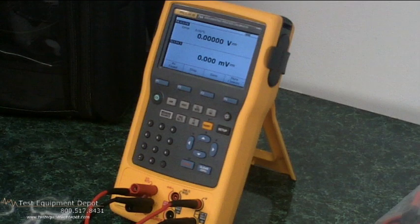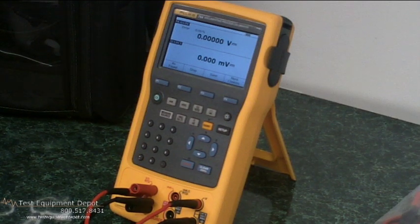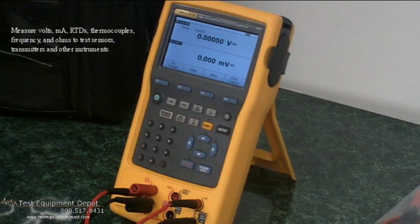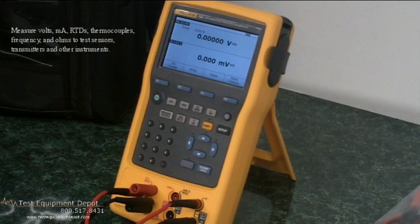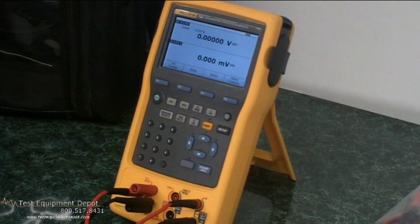For existing Fluke 740 series end users, as well as new end users, this calibrator will measure volts, milliamps, RTDs, thermocouples, frequency, and ohms that allow you to test sensors, transmitters, and other instruments.